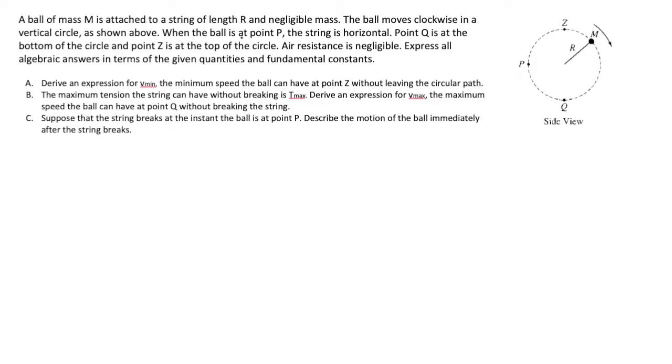Here are three things we're being asked for. The first is an expression for v_min, the minimum speed the ball can have at this point without leaving the circular path, or without falling out of the circle.